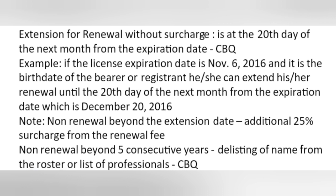Extension for renewal without surcharge is at the 20th day of the next month from the expiration date. That is the common board question. Example: if the license expiration date is November 6, 2016, and it is the birth date of the registrant, he or she can extend renewal until December 20, 2016. Note: non-renewal beyond the extension date incurs an additional 25% surcharge from the renewal fee. Non-renewal beyond five consecutive years results in the listing of the name from the roster or list of professionals.